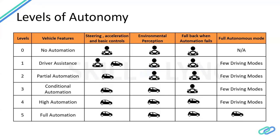In between those two extremes you have icons indicating driver input versus full vehicle control. Currently we are somewhere between level two and level three — partial automation. Examples of partial automation where the vehicle takes control of steering, acceleration, and basic controls include features like lane keep assist, adaptive cruise control, emergency braking, and traction control — features where the vehicle decides based on what it can sense in the environment.